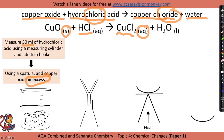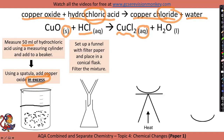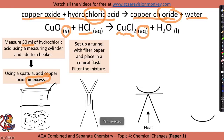The next step is to set up a funnel with filter paper and place this in a conical flask. We will then filter the mixture by pouring it through. The excess base that we don't need will collect in the funnel, and we will be left with our solution at the bottom.